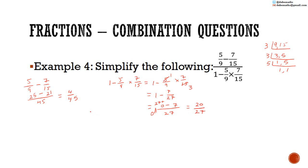So the numerator works out to be 4 over 45 and the denominator works out to be 20 over 27. Now we divide the numerator by the denominator: 4 over 45 divided by 20 over 27, which equals 4 over 45 multiplied by 27 over 20.